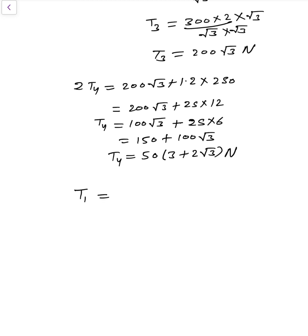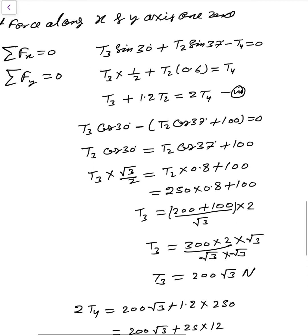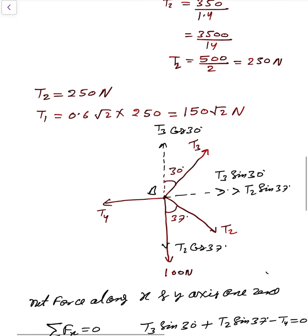Finally, the results are: T1 = 150√2 N, T2 = 250 N, T3 = 200√3 N, and T4 = 50(3 + 2√3) N.